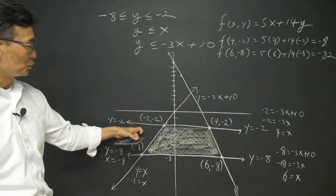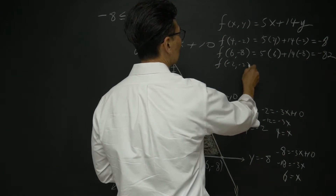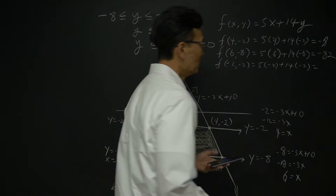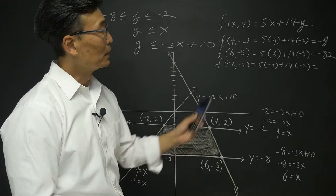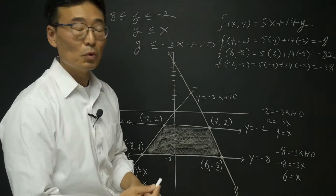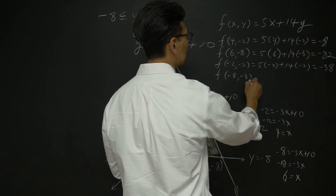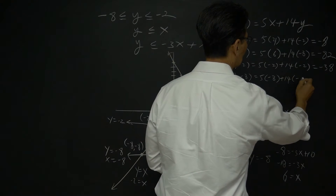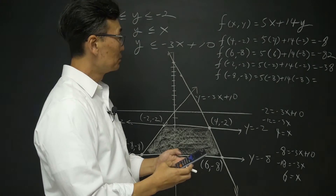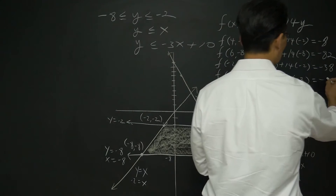Let's do the next one: negative 2 comma negative 2. So 5 times negative 2 plus 14 times negative 2 gives us negative 10 and negative 28, which is negative 38. Let's do one more: negative 8 comma negative 8 — 5 times negative 8 plus 14 times negative 8 — gives us negative 152.